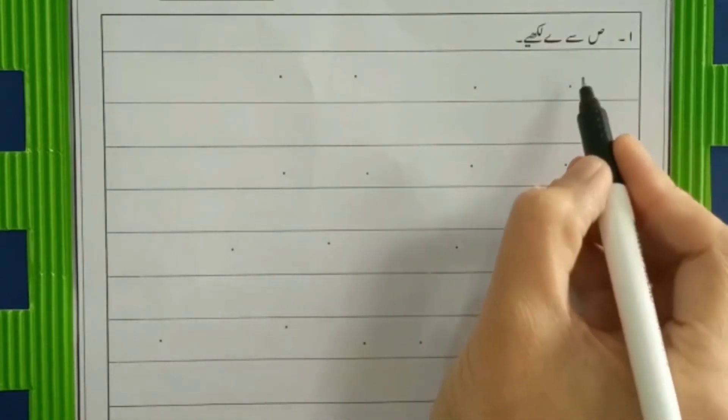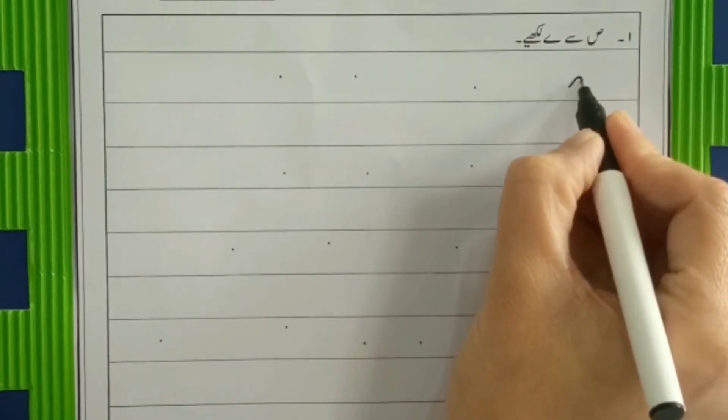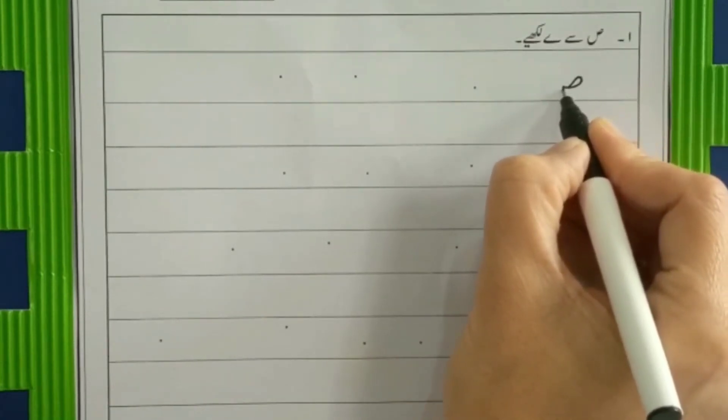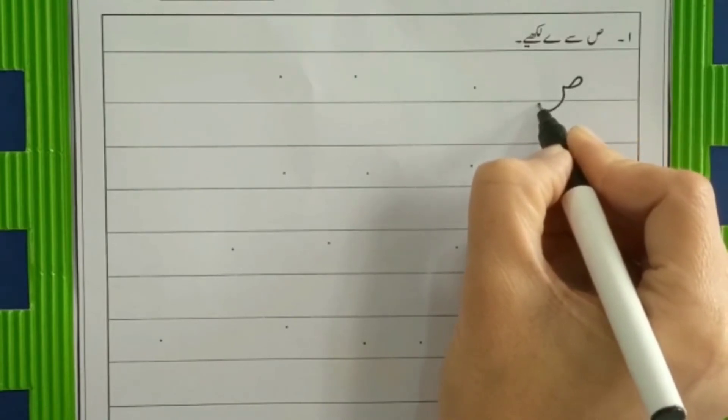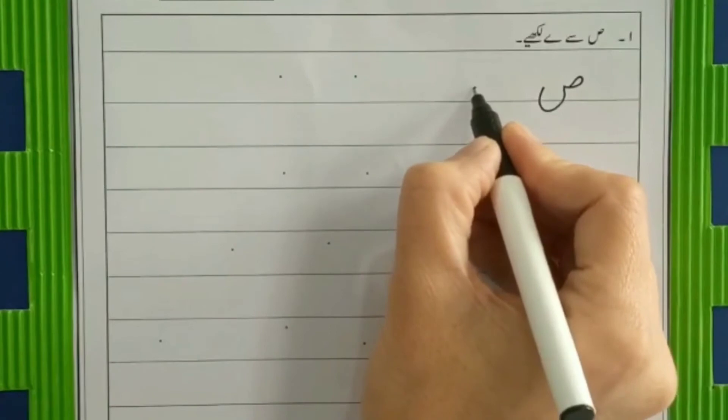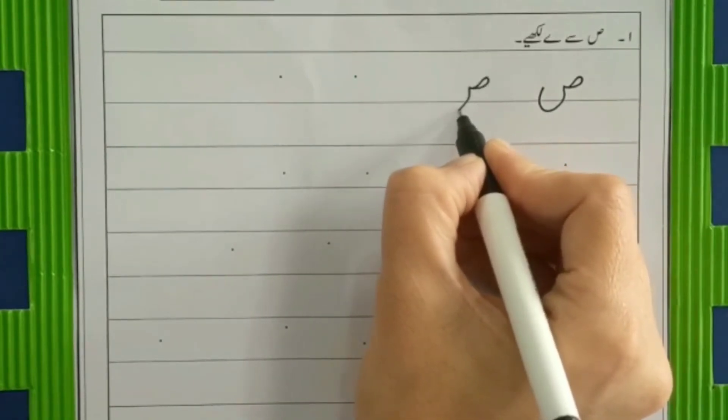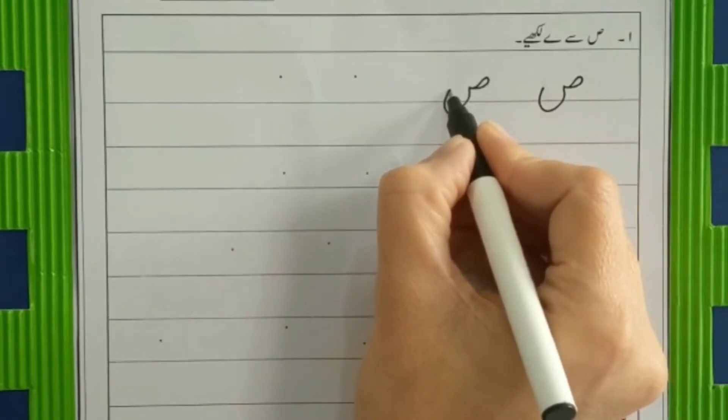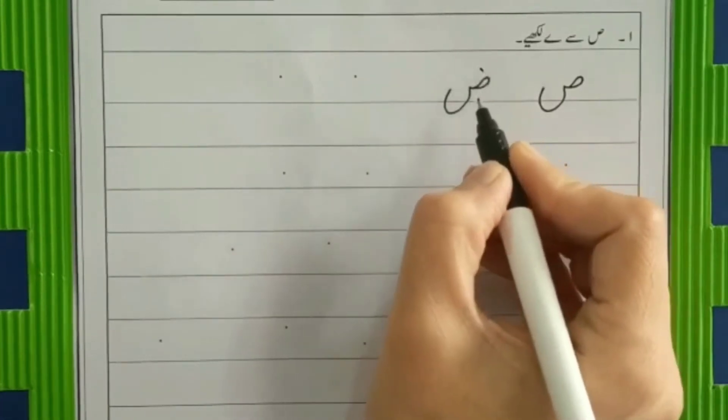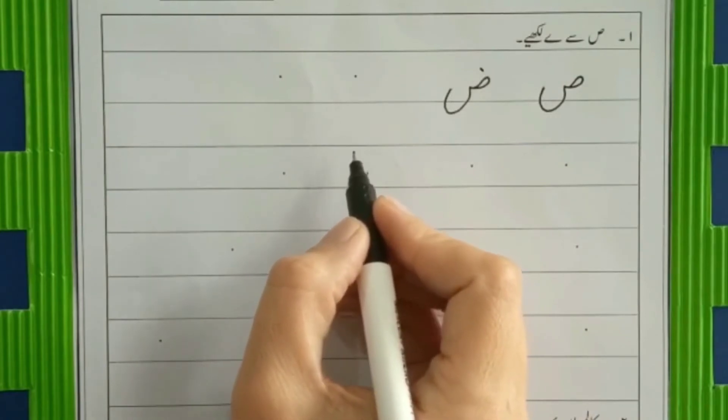Starting dots are here. Put your pencil on the starting dot and read the formation. Make an eye, a small neck and make its big belly. Swat. Then swat, make an eye, come down and make its big belly with one dot. Now what comes after swat? Toi.